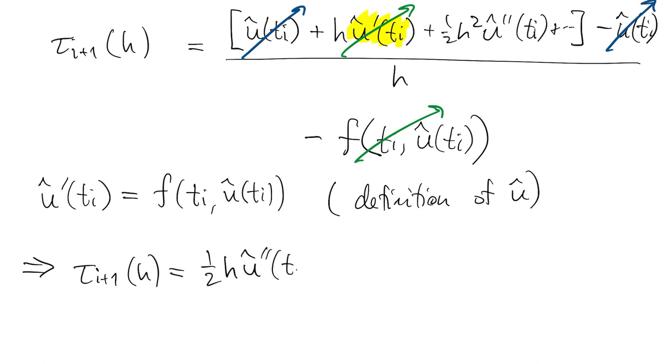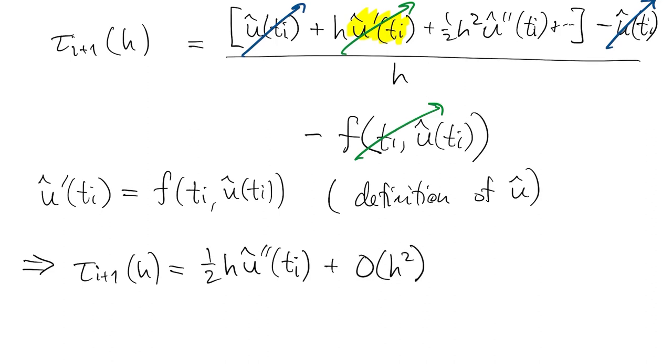What's left is a series starting with h to the first power plus higher order terms. The most important thing here is that the leading order of h in tau is first order.